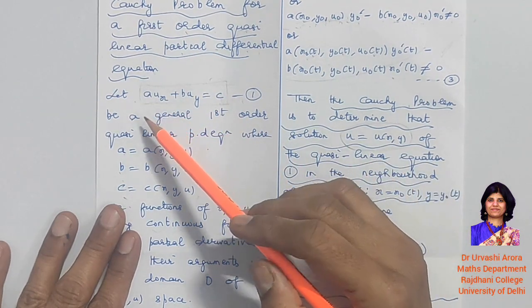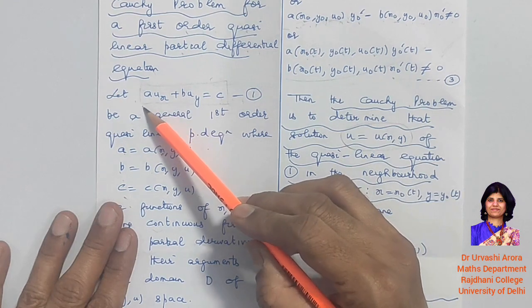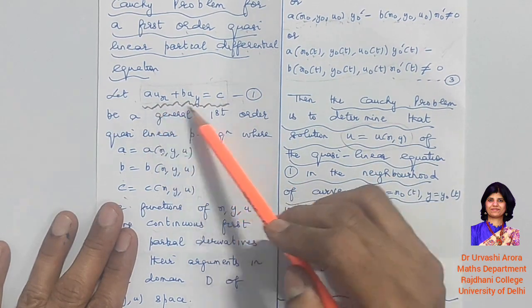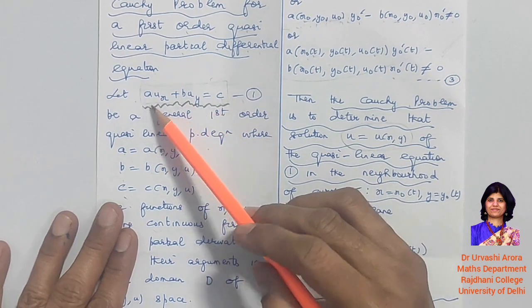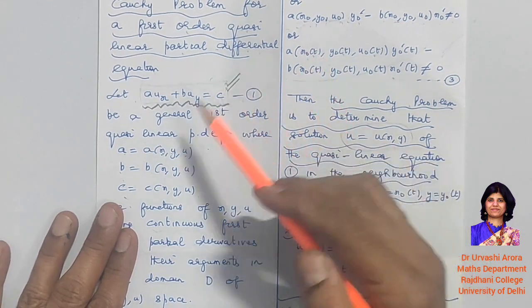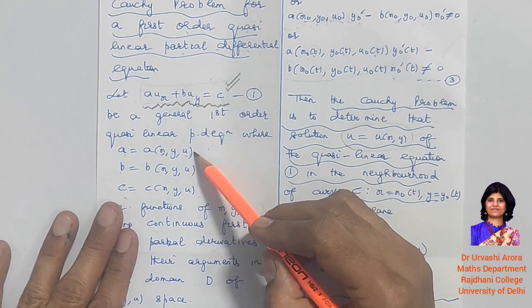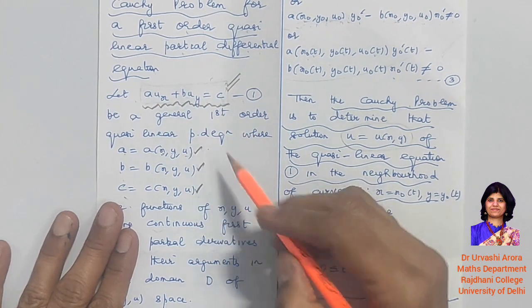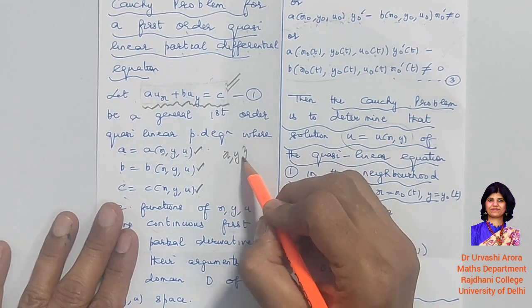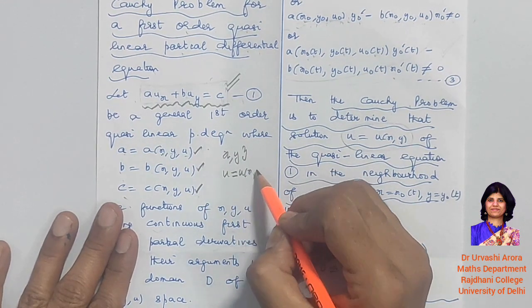If you take the general form of a first-order quasi-linear partial differential equation, it looks like this: a·u_x + b·u_y = c. I have discussed this form in my earlier videos, where a, b, and c are functions of x, y, and u. Here x and y are independent variables and u is a dependent variable.